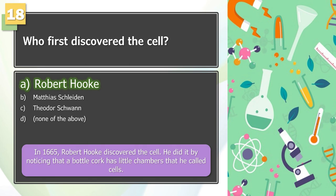The answer is A. In 1665, Robert Hooke discovered the cell. He did it by noticing that a bottle cork has little chambers that he called cells.